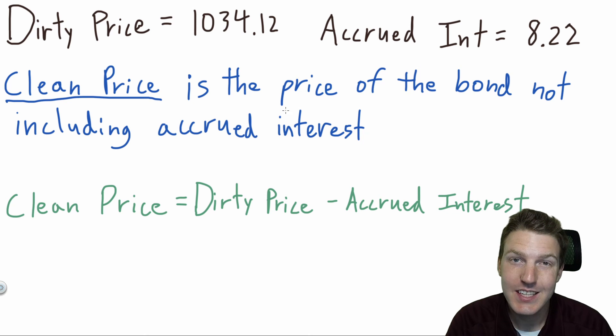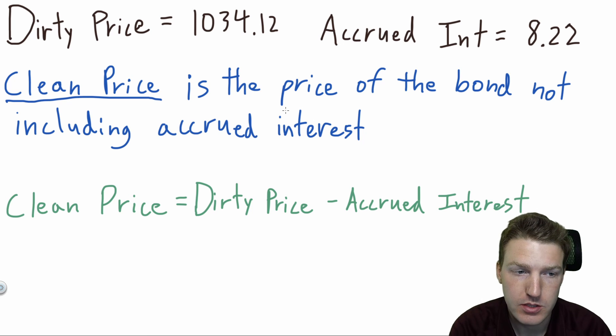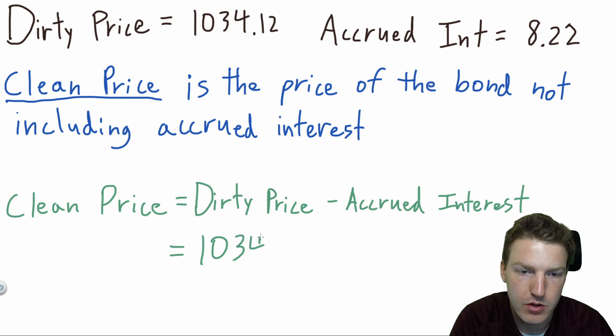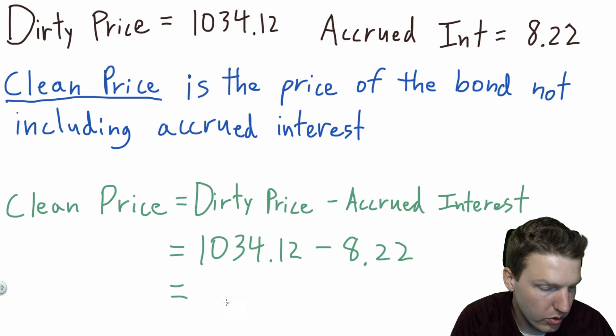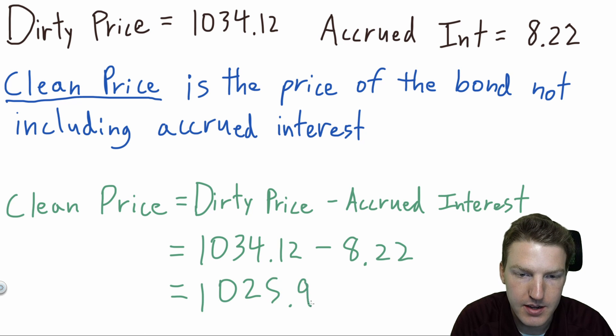Finally, we can calculate the clean price of the bond, which is just the price of the bond, not including the accrued interest. So clean price equals dirty price that we calculated earlier of $1,034.12 minus the $8.22 of accrued interest to give us a total clean price of $1,025.90.